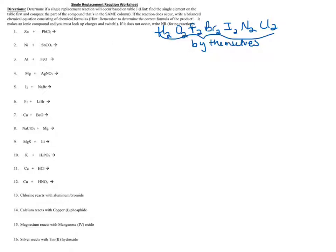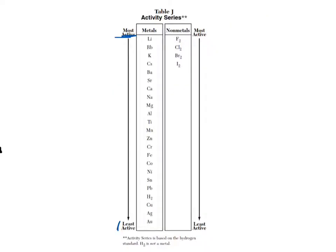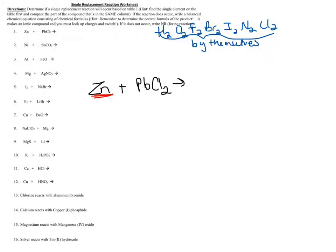Let's look at an example and learn how to use this table. I'm going to rewrite the first reaction: Zn reacting with PbCl2. What you do first is look up the single element — the one that's by itself — and find that on your activity series. Here's Zn on the metal side, which makes sense because Zn is a metal. The only non-metal on the metal side is H2, because H forms a positive ion when it's in solution, similar to metals. So we find our single element.